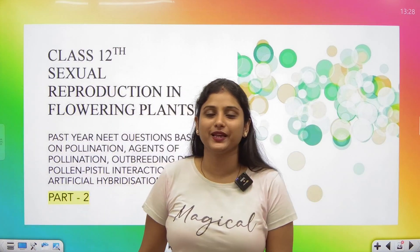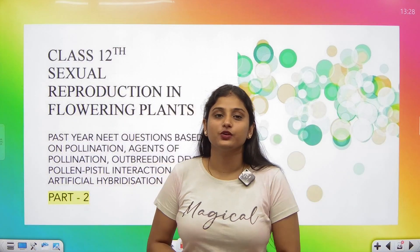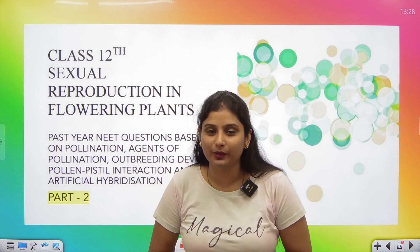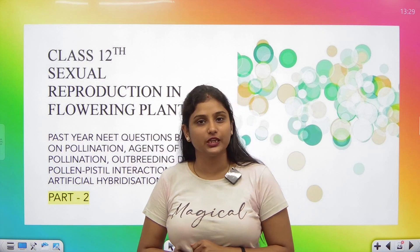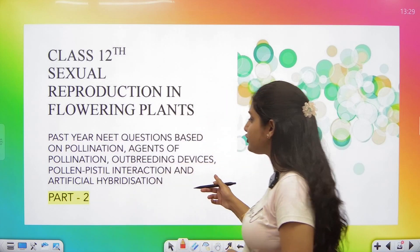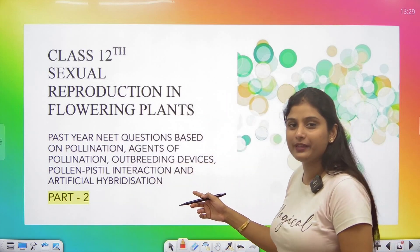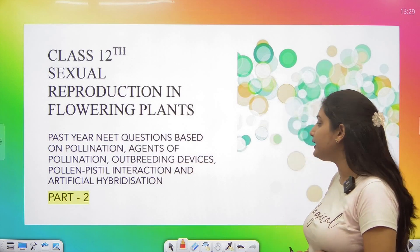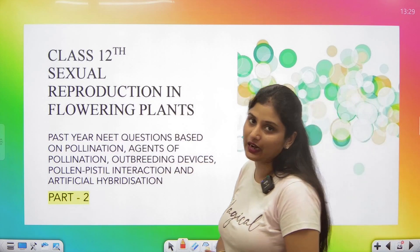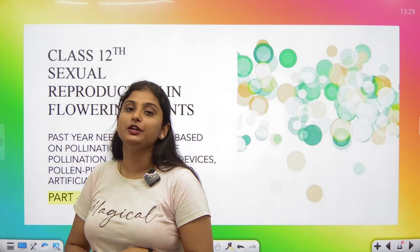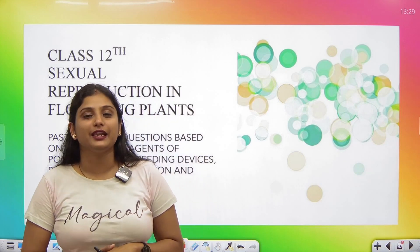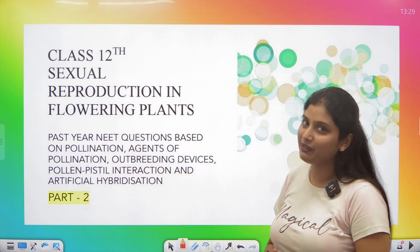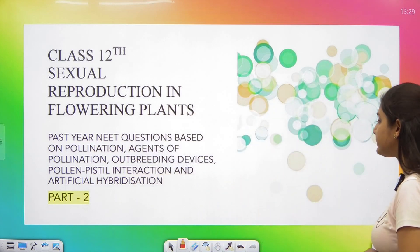Hello everyone, welcome back to my classes. I'm back with the second part of the PYQs. Remember, last video I told you that I divided the PYQs into three parts based on these topics: pollination, agents of pollination, outbreeding devices, pollen-pistil interaction, and artificial hybridization. We covered all these topics after discussing the male and female parts of the flower. And now I'm going to take their PYQ part 2. Let's begin.